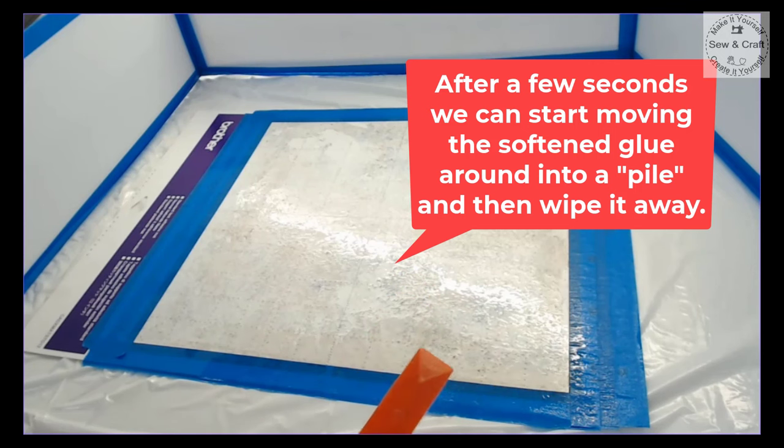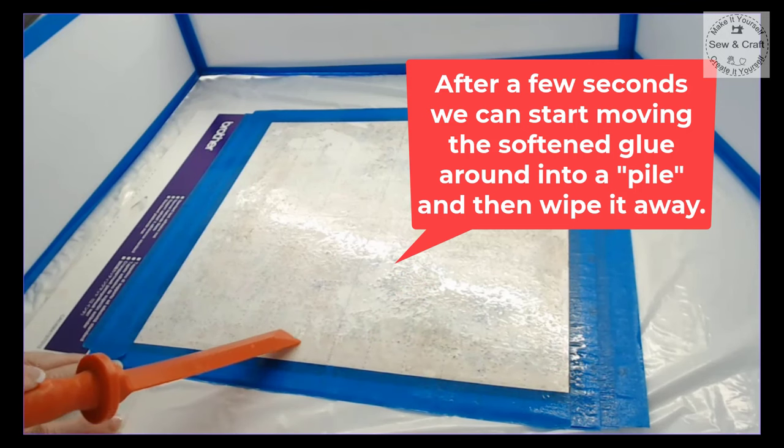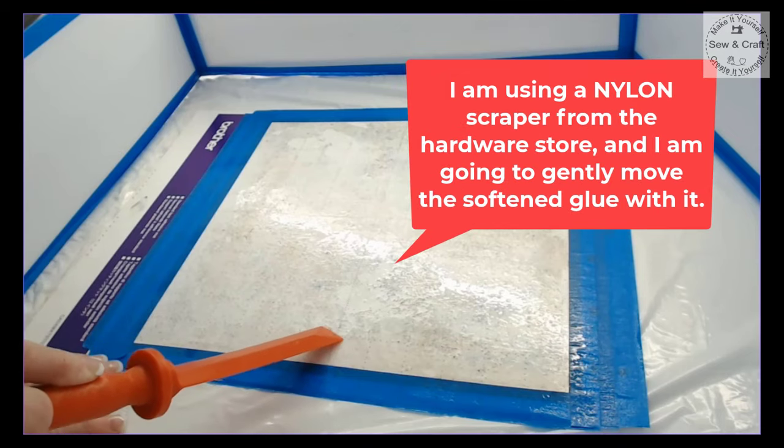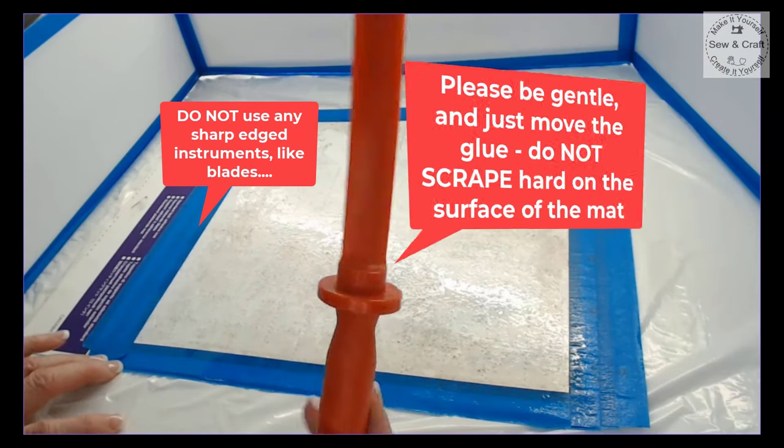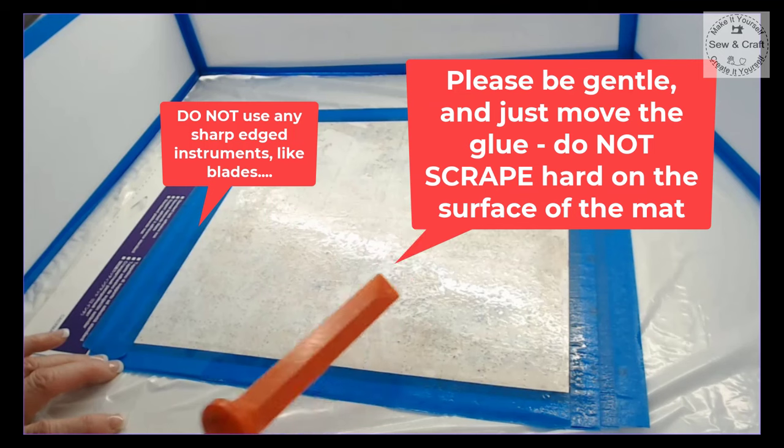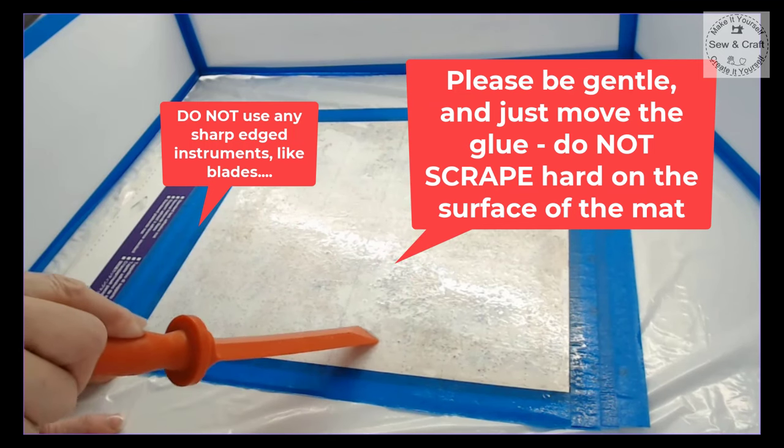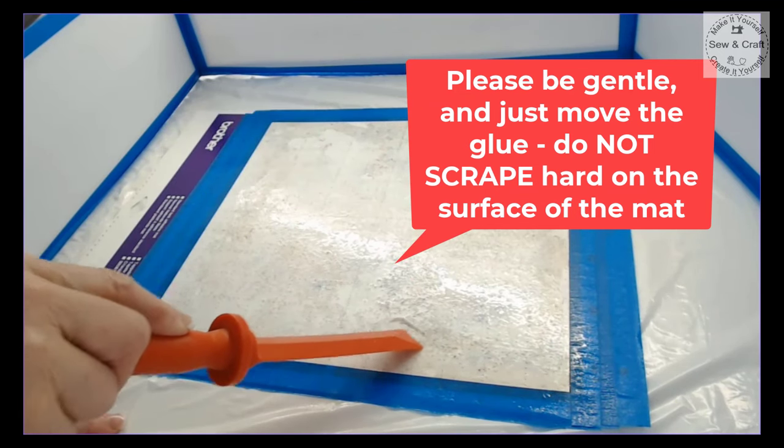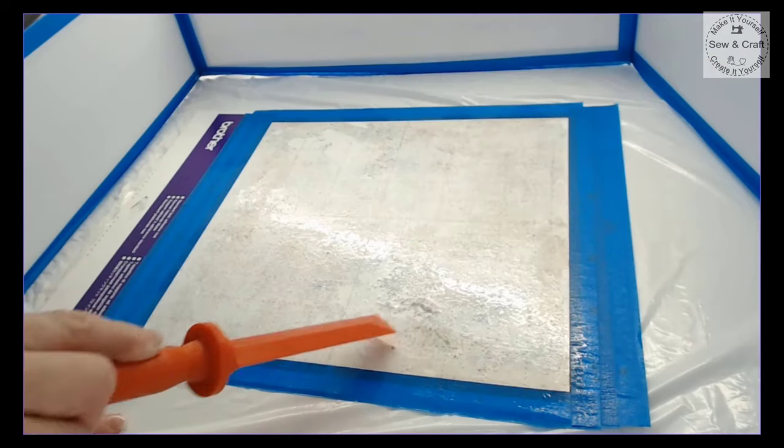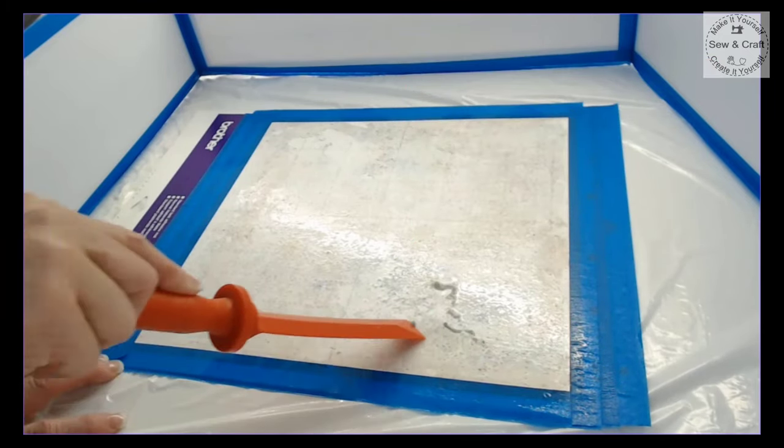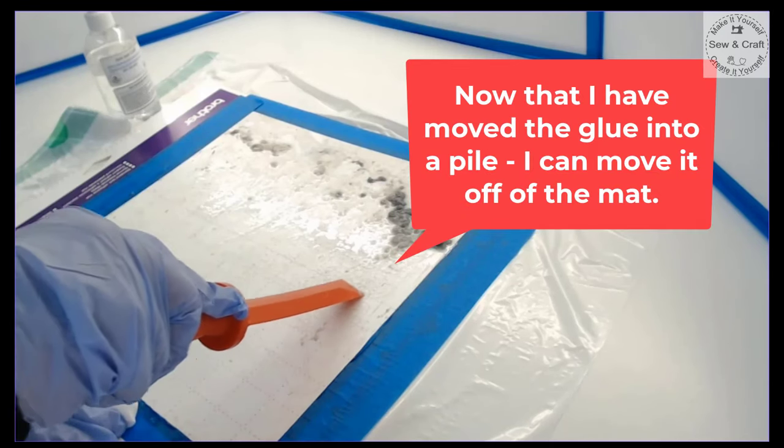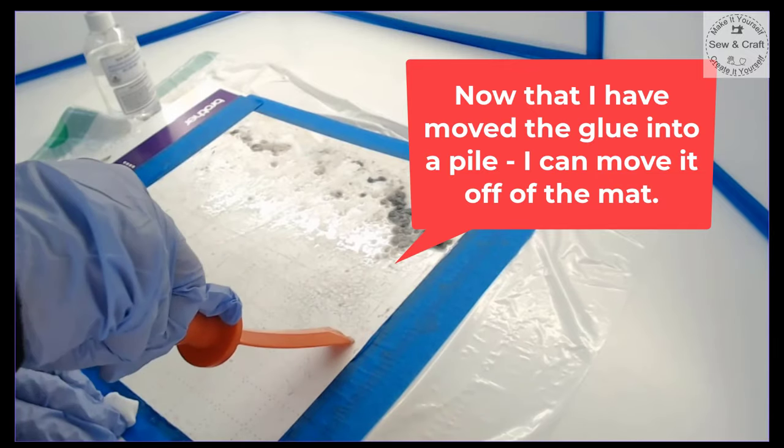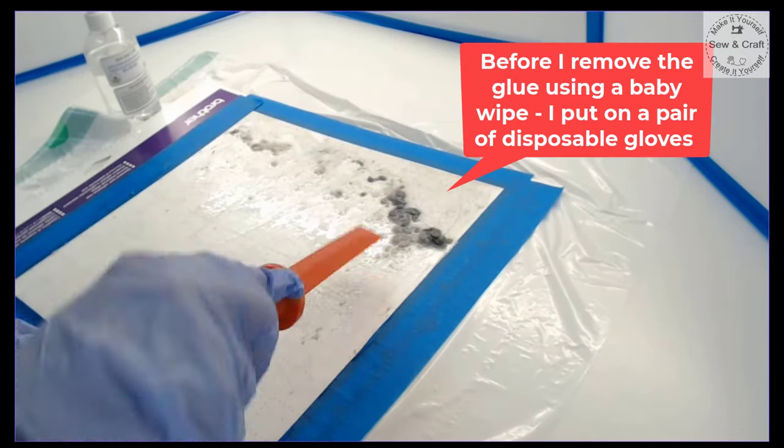I am using a nylon scraper that I got from the hardware store and I'm going to just gently move that softened glue with it. Please be gentle and just move the glue, don't scrape on your mat surface because you don't want to damage the lines that are printed on the mat. Just move it around until it all forms into a little pile. Now that I've moved the glue into a pile I can move it off of the mat.